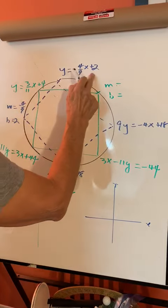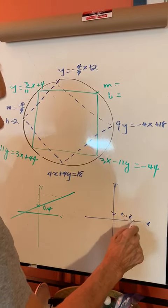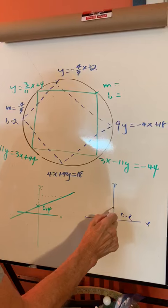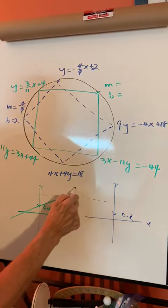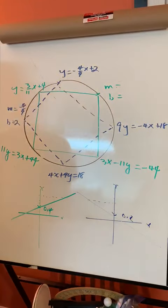We'll go over here. It goes through 2: (0, 2). A rise of 4—one, two, three, four—and a run of 9. There's your line.